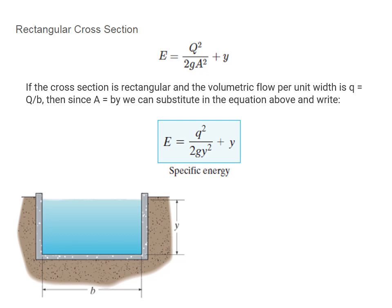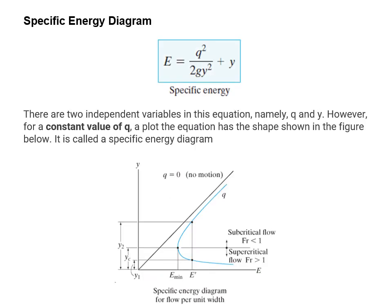For a rectangular cross section, the volumetric flow rate per unit width, small q, equals big Q divided by B, the width of the channel. Since the cross-sectional area equals B times Y, we can substitute into the energy equation to obtain the specific energy equation. This equation allows us to draw what is known as specific energy diagrams. For a constant value of Q, a plot of the equation — graphing Y on the vertical axis and energy on the horizontal axis — has a characteristic curve shape known as the specific energy diagram.